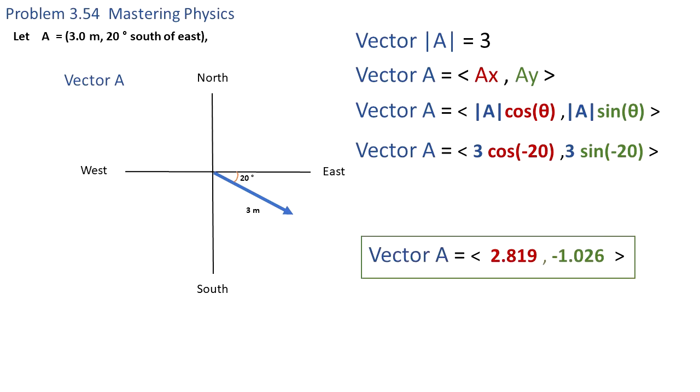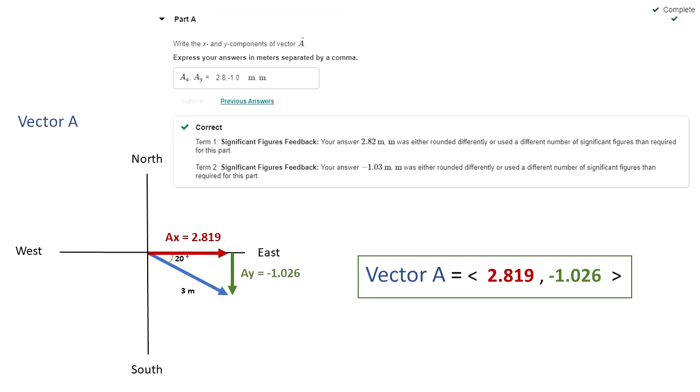After doing calculations in degree mode, we get that Ax is 2.819 and Ay is negative 1.026. This is because the y component is pointing downwards.